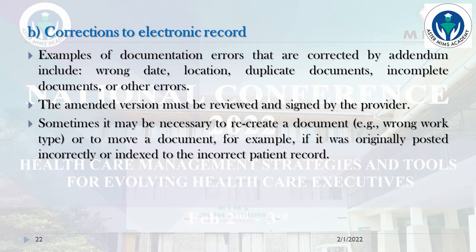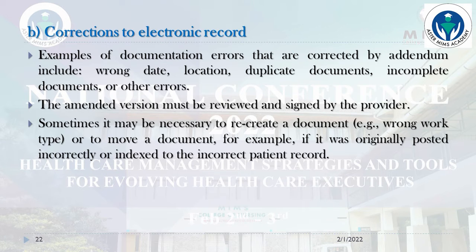Corrections to electronic records: examples of documentation errors corrected by addendum include wrong date, location, duplicate documents, incomplete documents, or other errors. The amended version must be reviewed and signed by the provider. Sometimes it may be necessary to recreate a document — for example, wrong work type — or to move a document if it was originally posted incorrectly or indexed into the incorrect patient record.